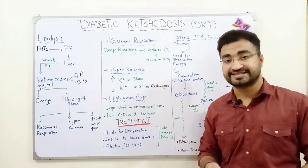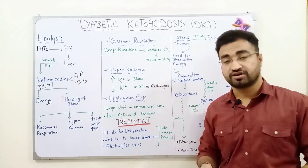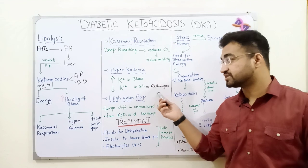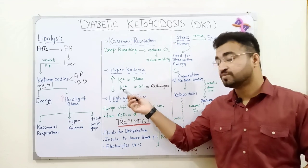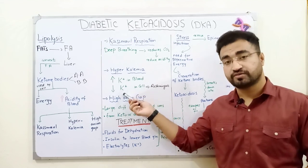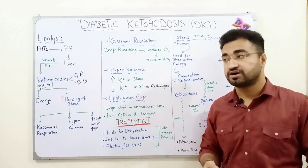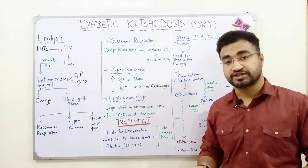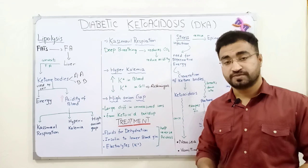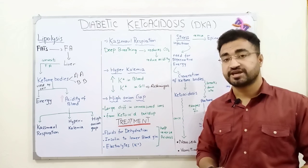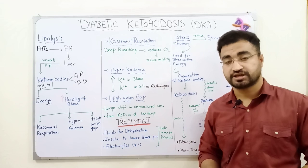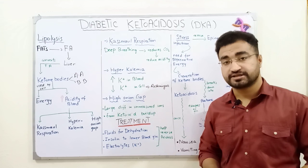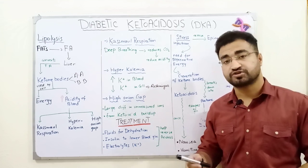An ECG can also be performed. If irregular heartbeat is observed, that indicates arrhythmia, and the basic reason for arrhythmia is low potassium level inside the cells — a symptom of diabetic ketoacidosis. Additionally, an arterial blood gas (ABG) test can be performed, which measures the pH of the blood. So between ABG, urine analysis, ECG, and blood potassium measurement, the patient can be continuously monitored.